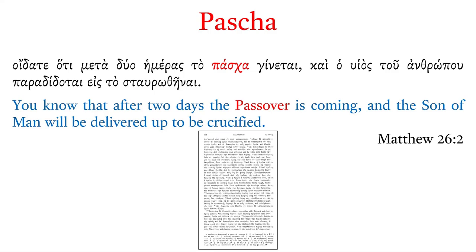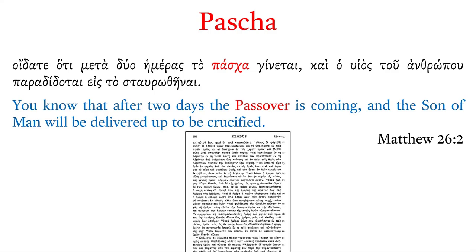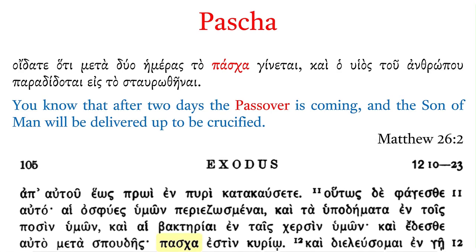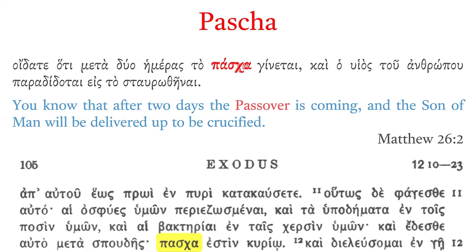This word appears for the first time in the Septuagint in Exodus 12:11. It's the Passover word, and you can see in the Septuagint it does not bear any accent marks, unlike in the New Testament.